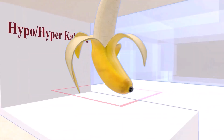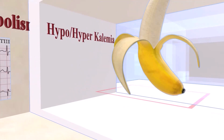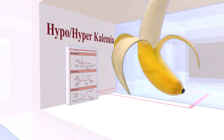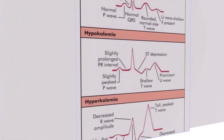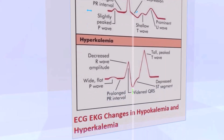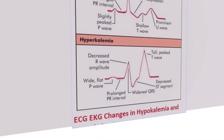Then we get to the banana room — bananas are high in potassium, so this makes us think of kalemia: hypo or hyperkalemia. There's also a very shallow U wave that may normally be present. In hypokalemia, there's a prominent U wave. In hyperkalemia, we see a tall, peaked T wave — think of the sharp T wave as being very hyper, going very high and sharp.